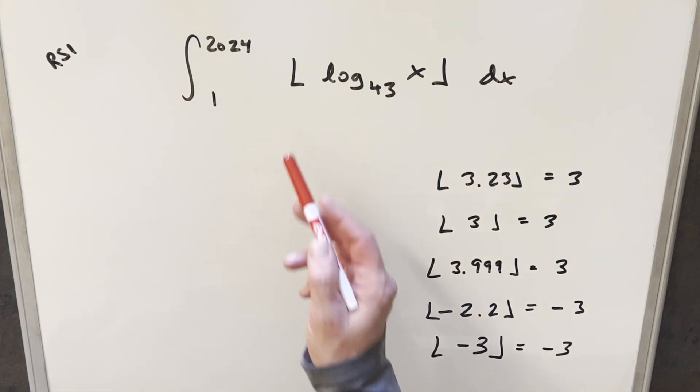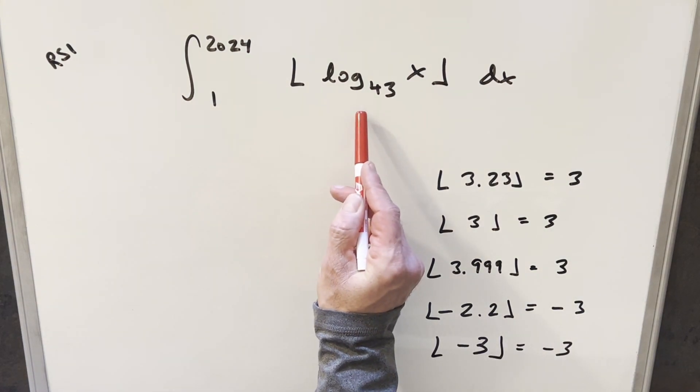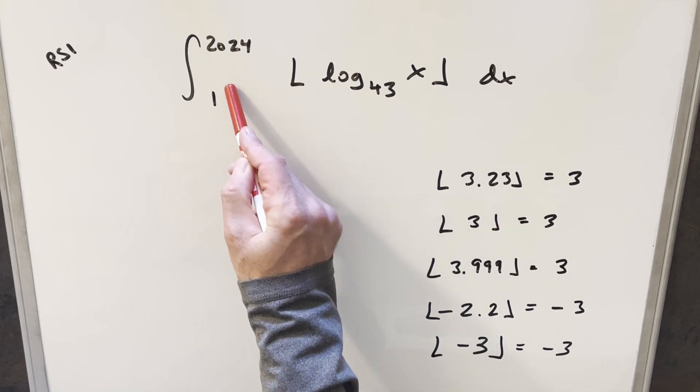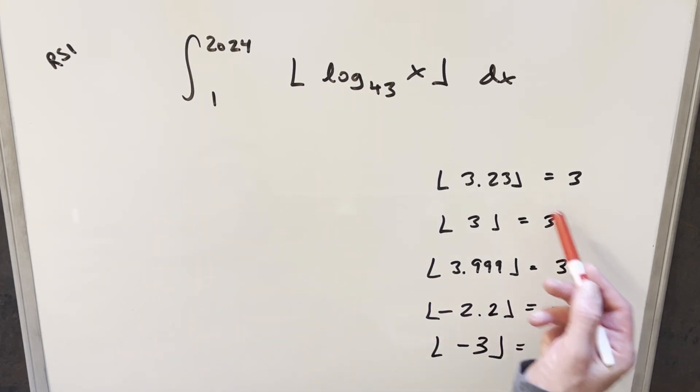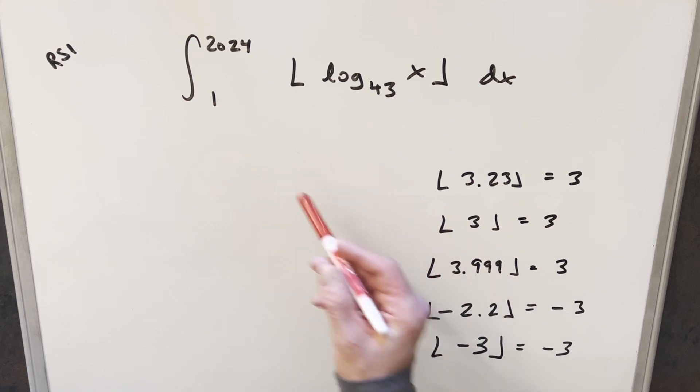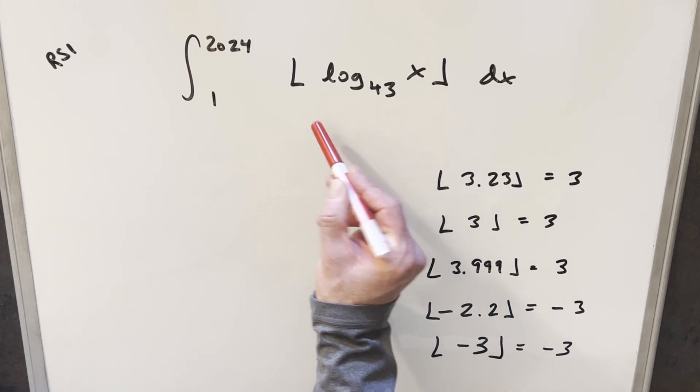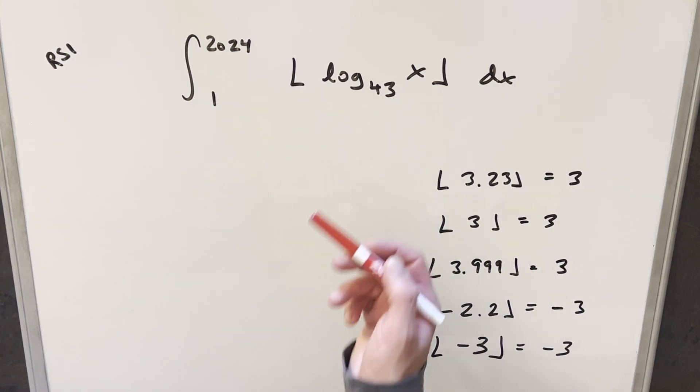Now coming back to our integral, we usually can get some pretty good simplification because if we can break this up, if we can break up our integral the right way, we'll notice the floor is going to return integer values. If we're integrating integer values, we're basically just integrating one, the problem will become easy.